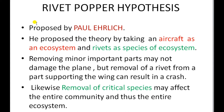In this hypothesis, he took an aircraft as an ecosystem and the rivets of an aircraft as the species of the ecosystem. Removing minor or less important parts may not damage the plane — for example, removing rivets from chairs or compartments inside the plane which are not very important may cause little or no damage to the entire aircraft.